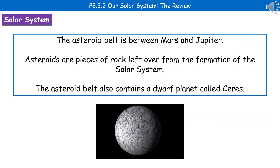Another key feature of our solar system is the asteroid belt, which is located between Mars and Jupiter. Asteroids are pieces of rock that are left over from the formation of the solar system, but also within the asteroid belt we've got a dwarf planet called Ceres, which is at the bottom there.